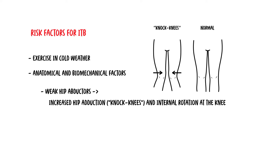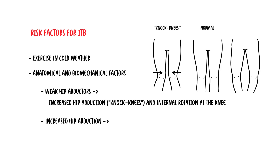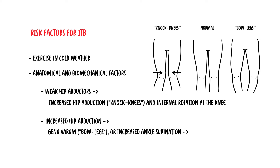Also, increased hip abduction, genu varum or bow legs, with increased ankle supination are thought to develop increased tension of the ITB at the lateral femoral epicondyle.